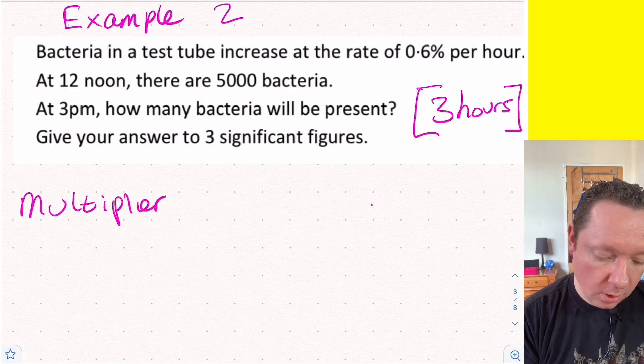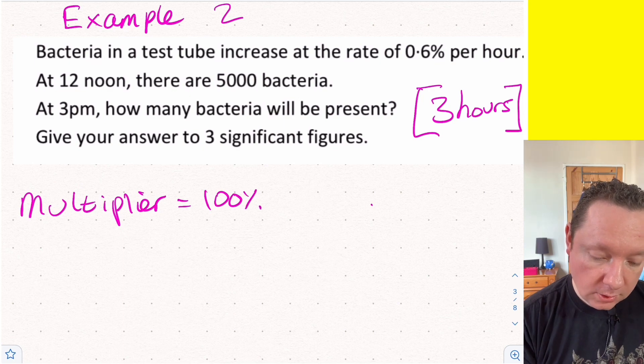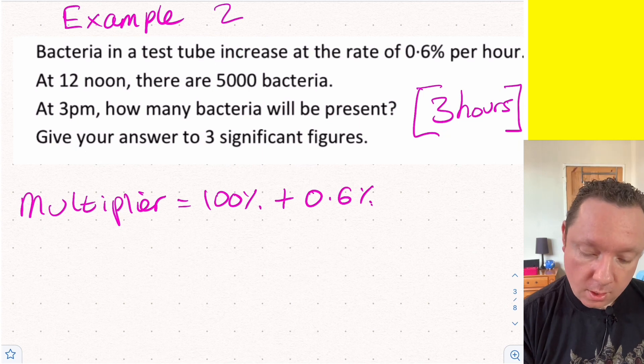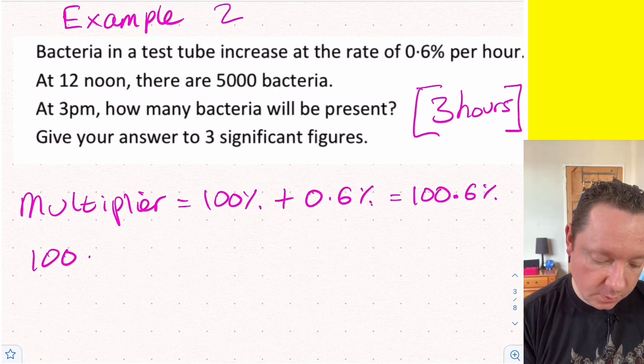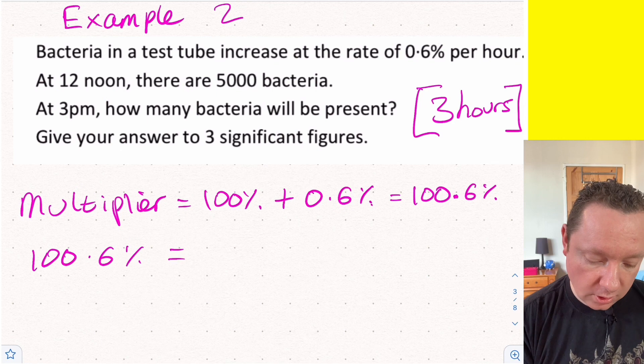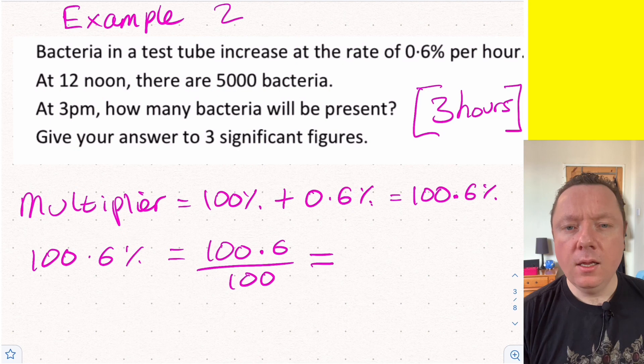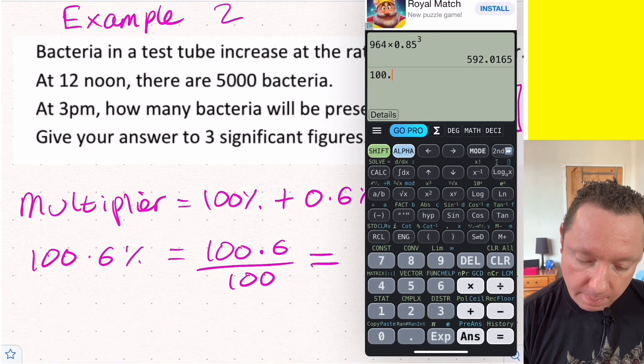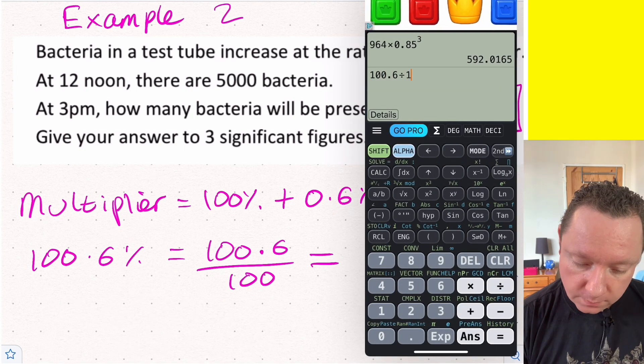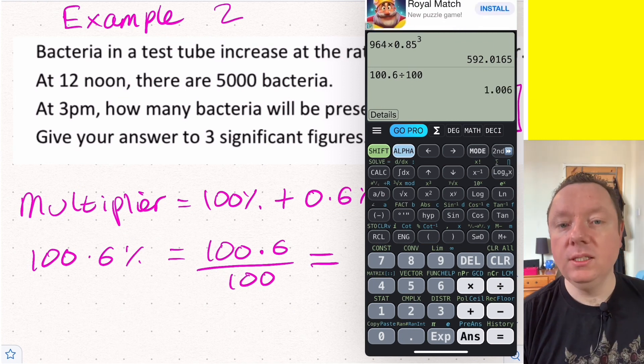So 100% plus 0.6% - get a calculator if we need to - 100.6%. That's a decimal, so let's do that. 100.6% is 100.6 divided by 100, and let's be careful and get our calculator. 100.6 divided by 100 equals 1.006.